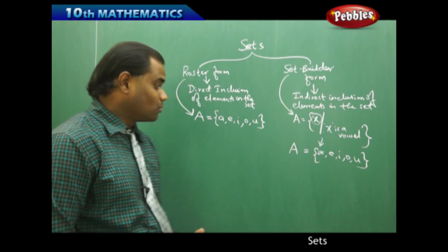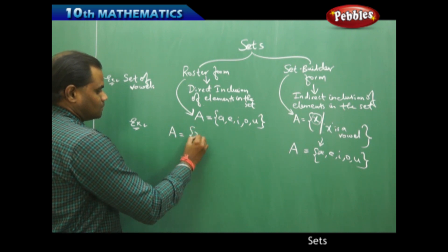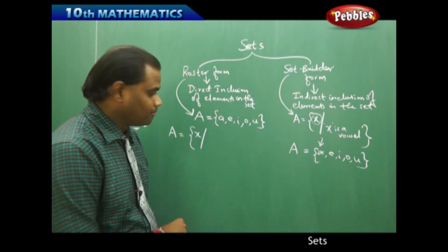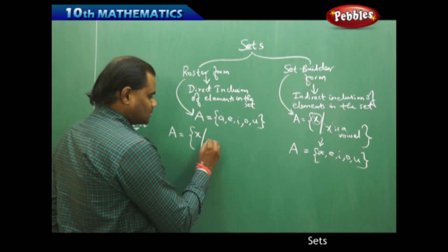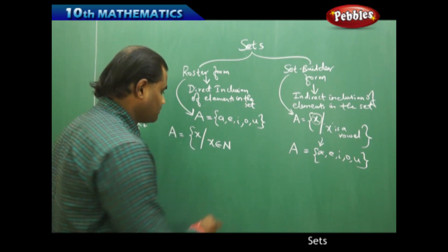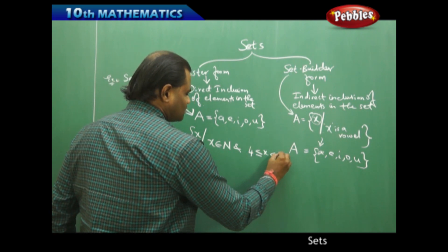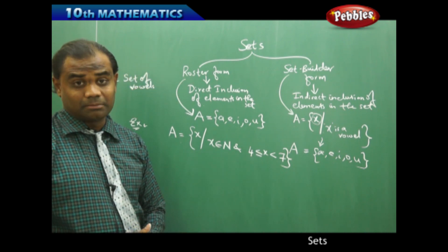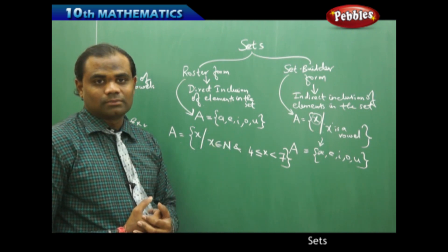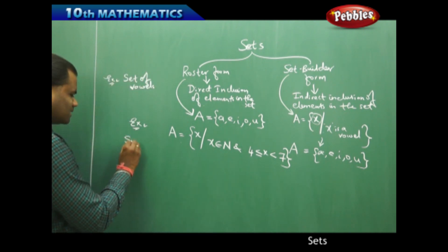Let me take one more example where I take a set builder form and want to construct its corresponding roster form. My set A is {X such that X is a natural number} and the condition is that X lies within a certain range. The information is given indirectly in the set builder form, and I want to generate the elements and write them in roster form — how do I do that? That is the key question in this problem.